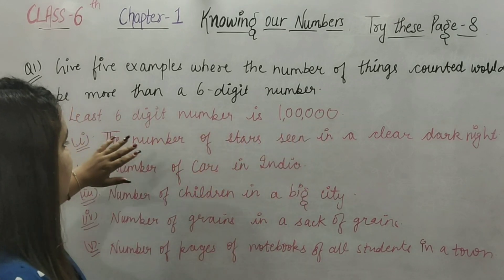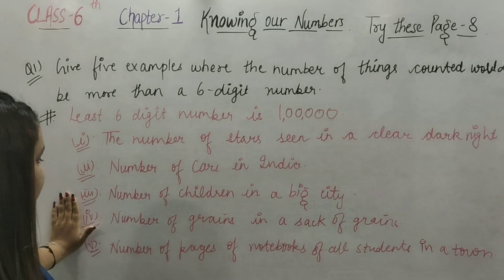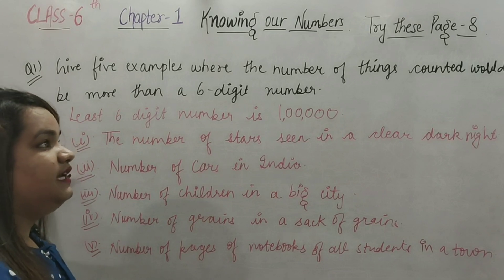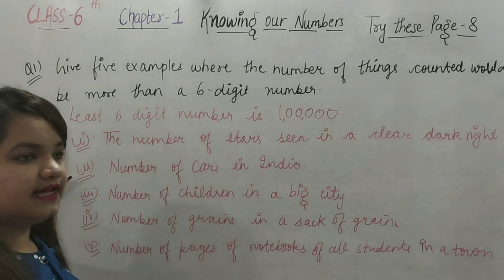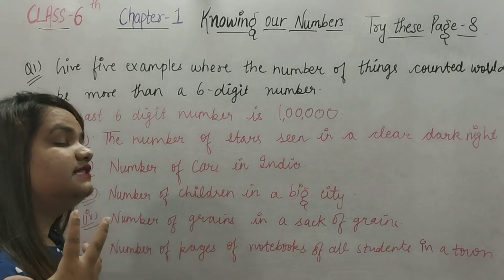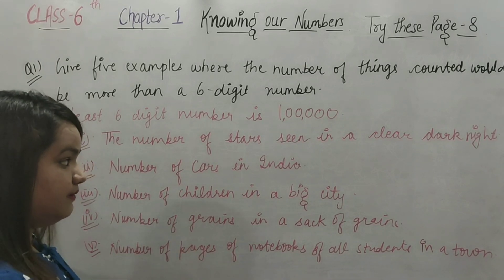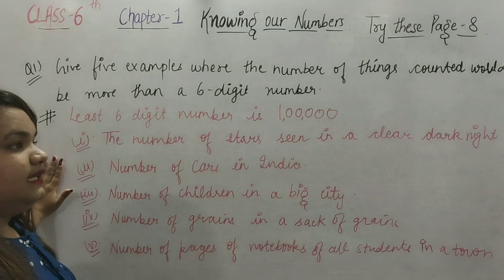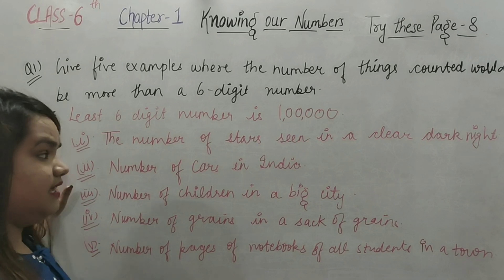First example: the number of stars seen in a clear dark night. When you look at stars on a clear night, the count is far more than 1 lakh. Second example: the number of cars in India. If you look at India, the number of cars is very large — definitely more than 1 lakh.